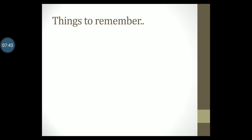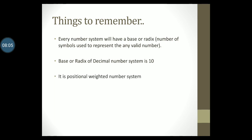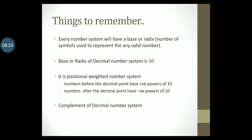That concludes my lecture. Some things to remember: Every number system will have a base or radix which refers to the number of symbols used to represent any valid number. The base or radix of your decimal number system is 10. It's a positional weighted number system because numbers before the decimal point have positive powers of 10 and numbers after the decimal point have negative powers of 10. The complement of the decimal number system is of two types: 9's complement and 10's complement. It is very easy to find the 9's complement and 10's complement of any given decimal number.